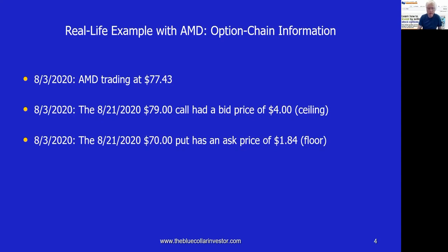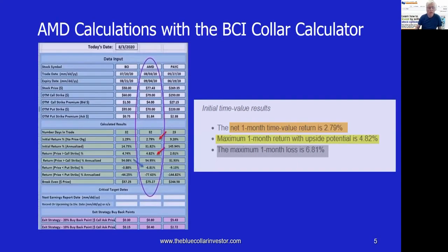Notice that when we sell an option, we sell at the bid price — the lower. And when we buy an option, we buy at the ask price — the higher of the bid-ask spread. We feed this information into the BCI Collar Calculator. The option chain information is inserted into the white cells at the top of the spreadsheet: the stock price at $77.43, the call strike at $79, the put strike at $70, the premium for the call $4, and the premium for the put $1.84.